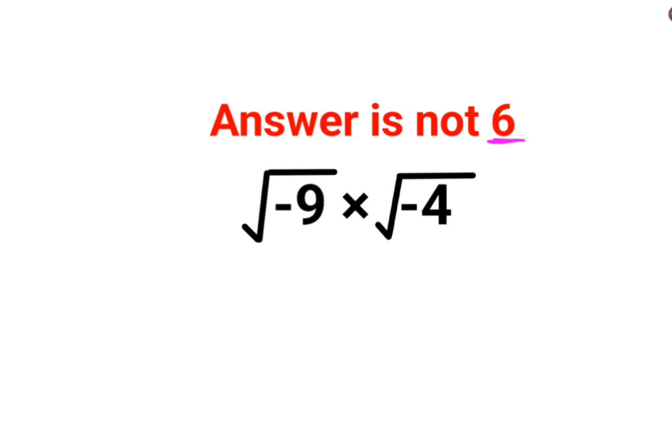See, technically we can do this this way, right? Root of negative 9 multiplied by root of negative 4, which should get you negative into negative is positive, so root of 36. So the answer should be 6. That is not how this works.